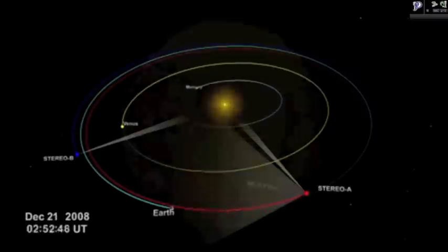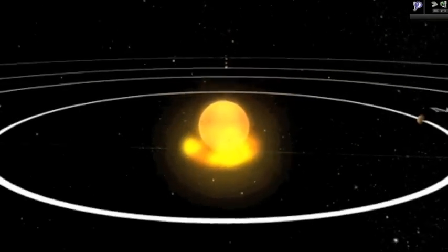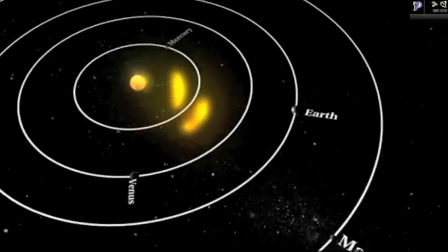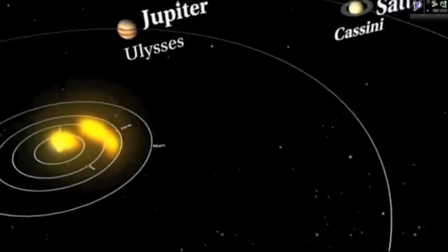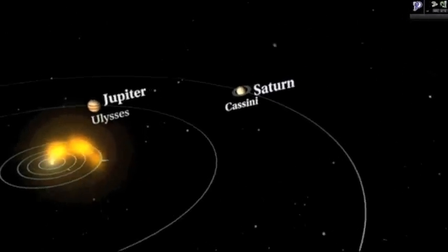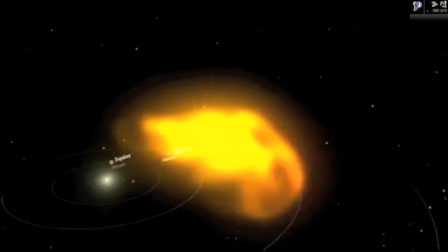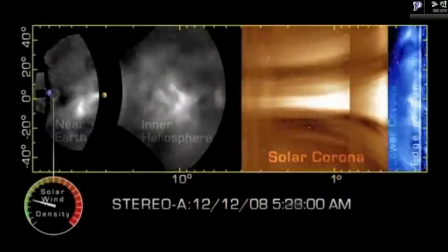For the first time ever, scientists can watch a CME from its formation on the Sun to its impact with Earth's magnetosphere, ending decades of speculation about how features in the Sun's corona caused the massive, complex shape of a CME as it expands to 10 million times its size.